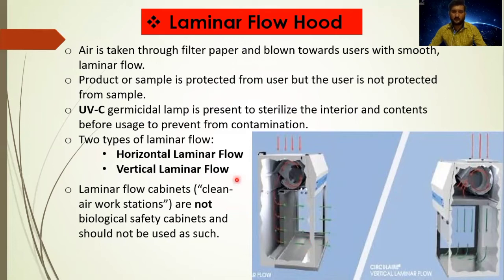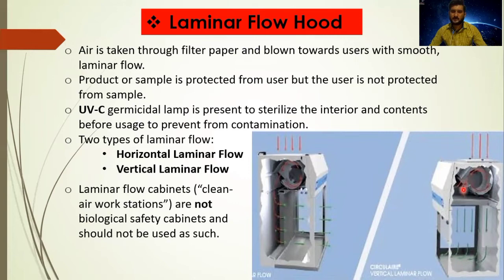In the vertical laminar flow hood, instead of horizontal air flow, there is vertical air flow — hence the name vertical laminar flow. The blower draws air from the environment; the filter paper is located at the top of the cabinet. Air passes through the filter paper via the blower and falls vertically onto the sample or product — that is why it is called vertical laminar flow.